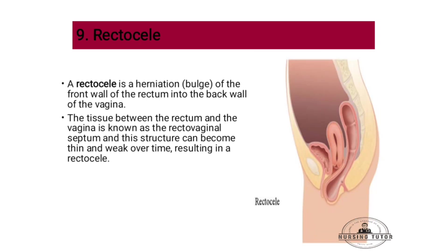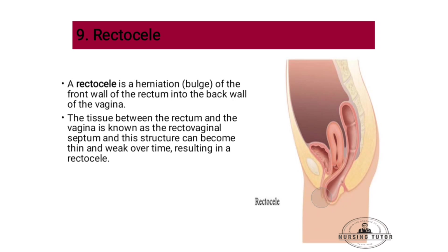Rectocele is a herniation or bulging of the rectum into the back wall of the vagina. The tissue between the rectum and the vagina is known as the rectovaginal septum, which can become thin and weak over time, resulting in rectocele.